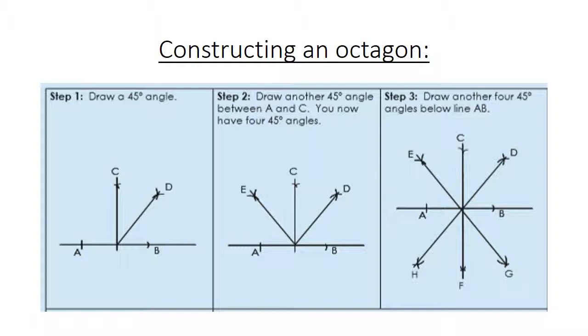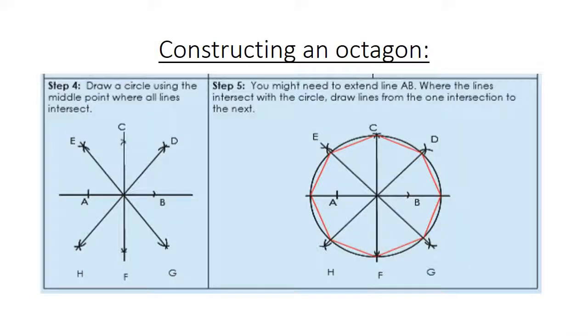You now have 4 45-degree angles. Draw another 4 45-degree angles below line AB. Draw a circle using the middle point where all lines intersect.